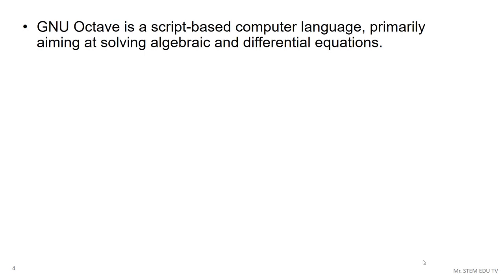GNU Octave is a script-based computer programming language primarily aiming at solving algebraic and differential equations. You don't need to compile your computer code to run, so this is one of the biggest advantages over C or R programming languages, which makes your programming job very easy.